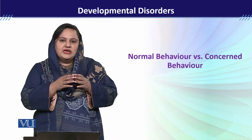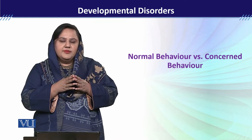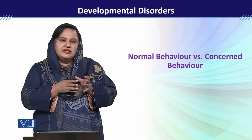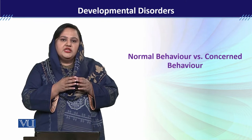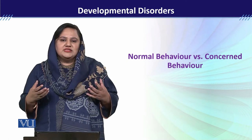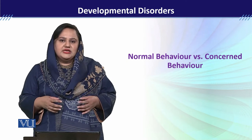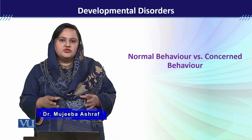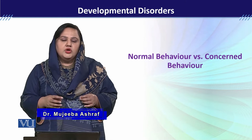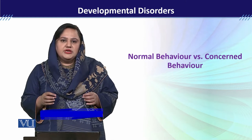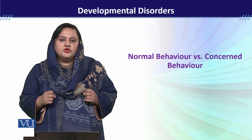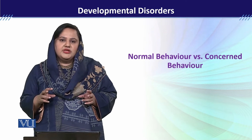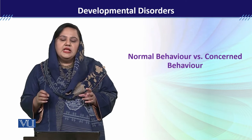Number one, we understand it in reference to developmental delay vs normal development. جب ہم بات کر رہے ہیں developmental delay کی، تو اس کا مطلب یہ ہے کہ بچے کی milestones age appropriately achieve نہیں ہوئے۔ لیکن جب normal behavior کی بات کریں تو milestones age appropriately achieve ہو چکے ہیں — اس وقت development normal ہے اور parents کو کوئی problem نہیں آئے گی۔